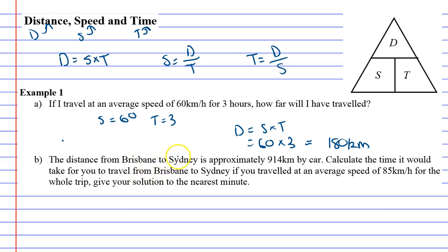The distance from Brisbane to Sydney is approximately 914 kilometers by car, so it's a distance of 914 kilometers. Calculate the time it would take for you to travel from Brisbane to Sydney if you traveled at an average speed of 85 kilometers per hour, so your speed is 85 kilometers per hour for the whole trip. Give your solution correct to the nearest minute.